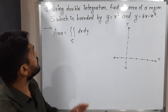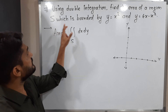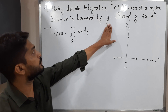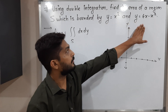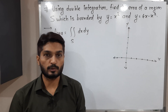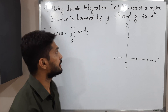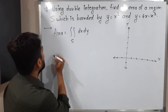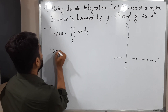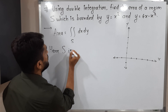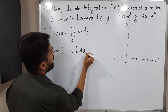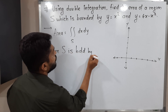They have clearly mentioned the region S which is bounded by y equals x squared and y equals 4x minus x squared. So let me clearly mention here: S is bounded by those two curves.